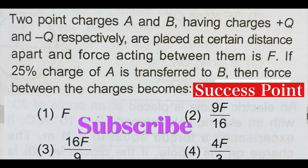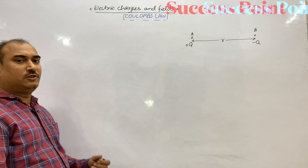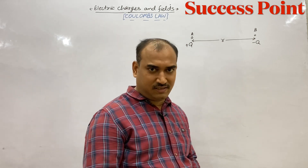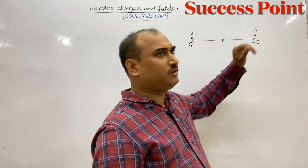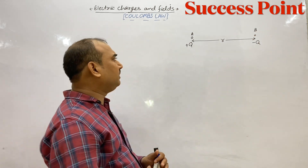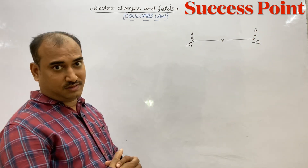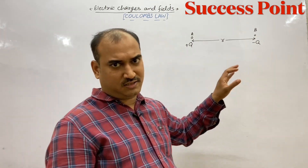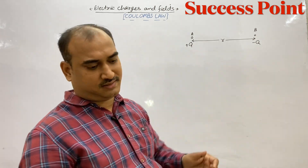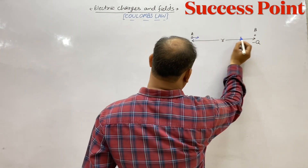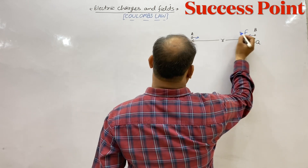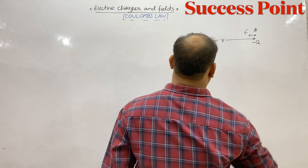If 25% of charge A is transferred to B, then force between the charges becomes — these are the 4 options given. So, this question has 2 charges: +Q is A and -Q is B. The force between them is attraction. F is the attractive force.